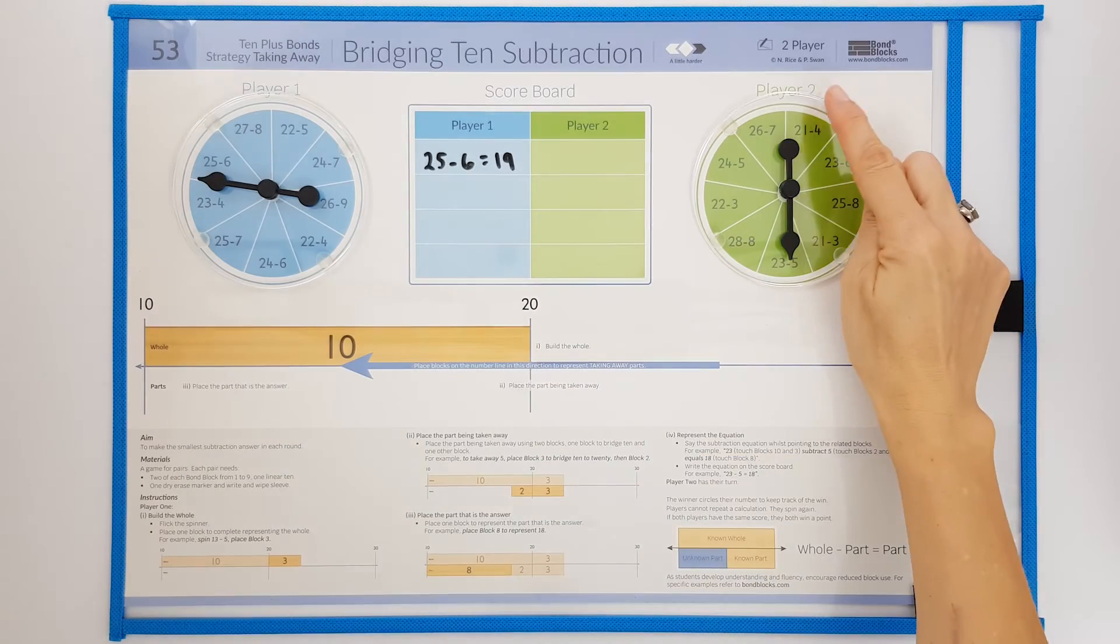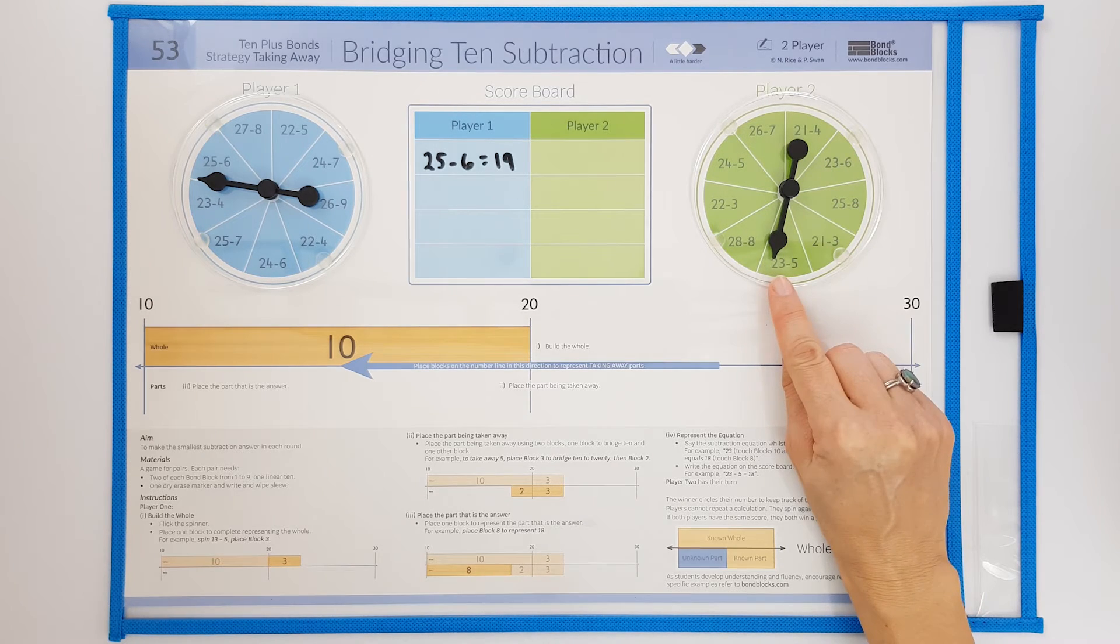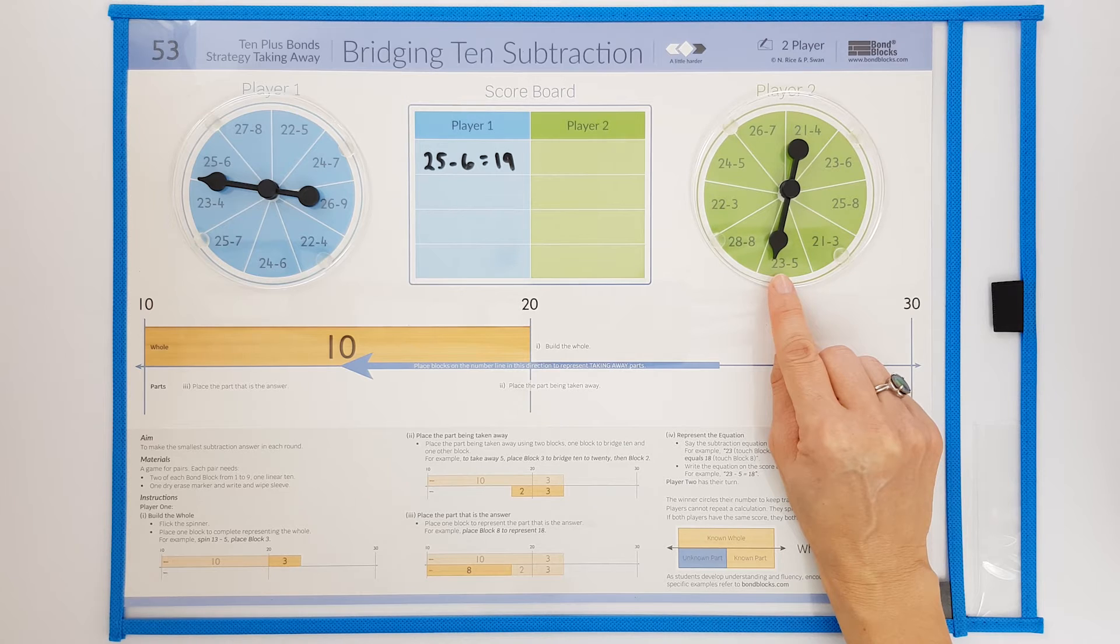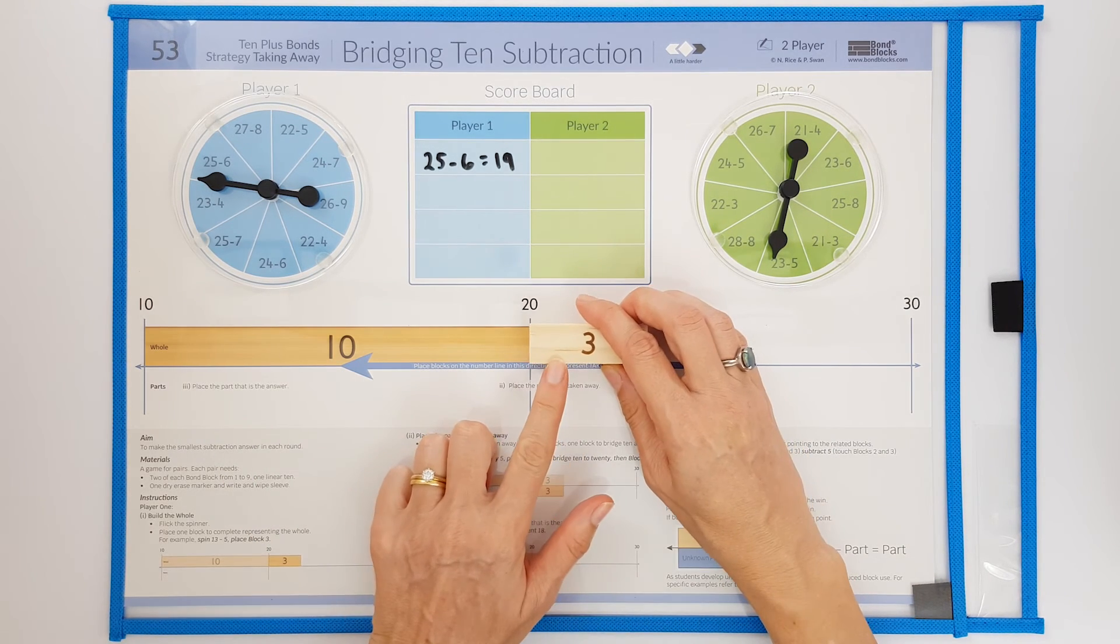Player 2 has their turn and I'm going to model spinning. 23 subtract 5. First they build the whole of 23. 20, 3.